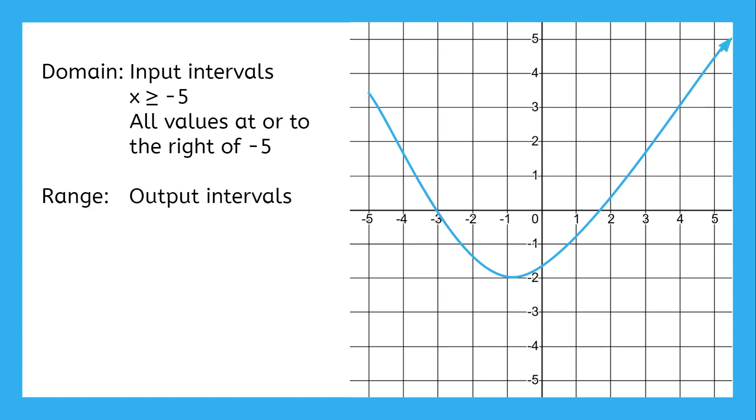For the range, the process is going to be exactly the same. The lowest value is at exactly negative two, and the graph goes up forever, thanks to the arrow. So we'd say that the range is every value at or above negative two. This way, we don't have to list every single number between negative five and infinity for the domain, or between negative two and infinity for the range.